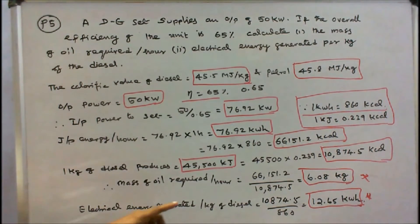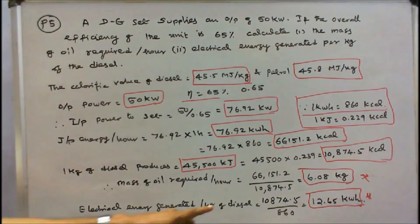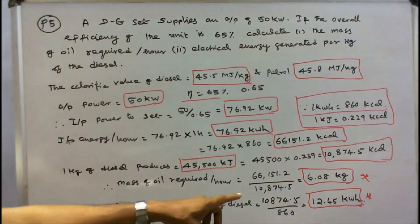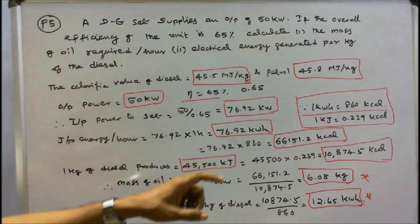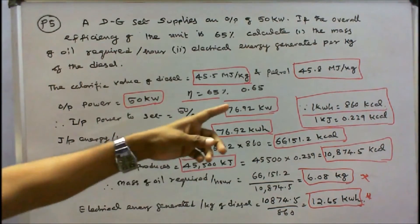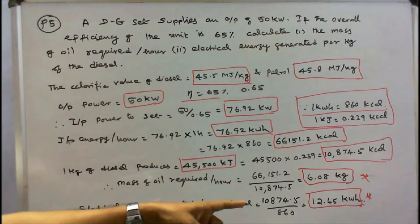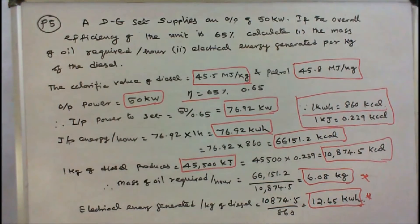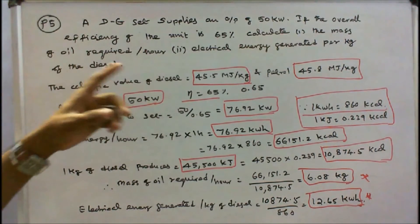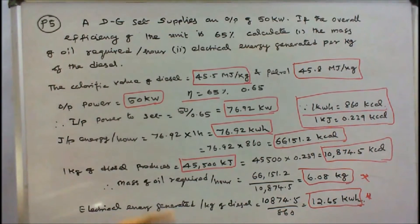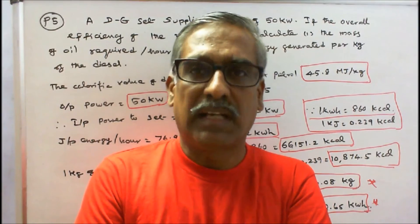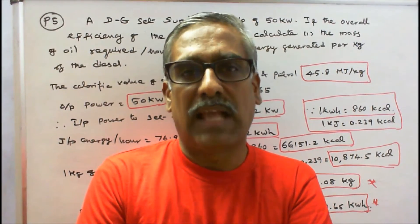Electrical energy generated per kg of diesel: 10,874.5 kcal divided by 860 equals 12.65 kWh. So electrical energy generated per kg of diesel is 12.65 kWh. With this I conclude my lecture. Thanks for listening.